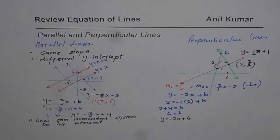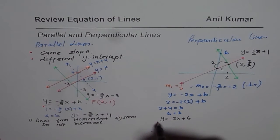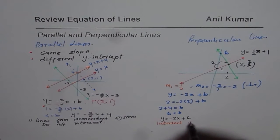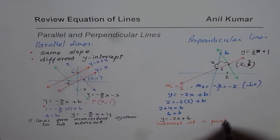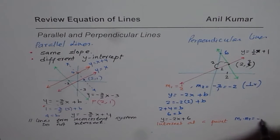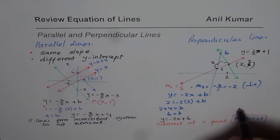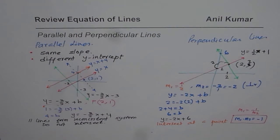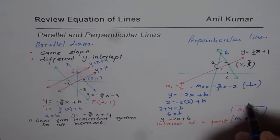Perpendicular lines always intersect at a point. The slope relationship is: M1 times M2 equals minus 1. This means M1 equals negative 1 over M2 — that is what we call the negative reciprocal, which defines perpendicularity.